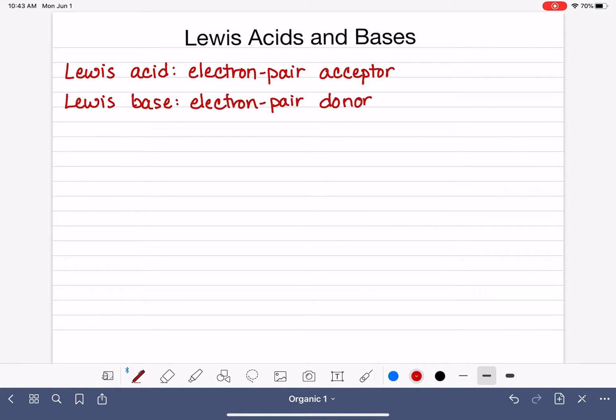Everything that is a Bronsted-Lowry acid can also be classified as an acid using the Lewis method. Let's look at an example.